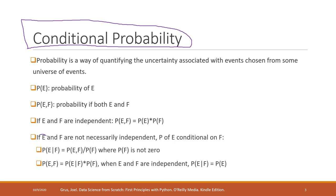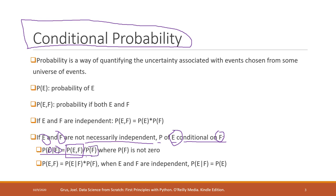If two events are not necessarily independent, then the conditional probability P(E | F) — the probability that E happens given that F happened — equals the probability that both E and F happened, divided by the probability that F happened.